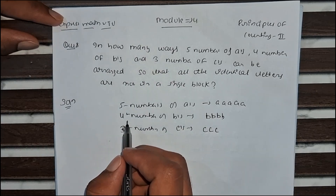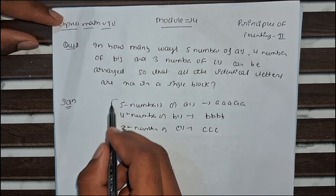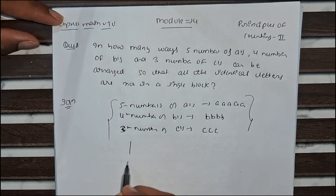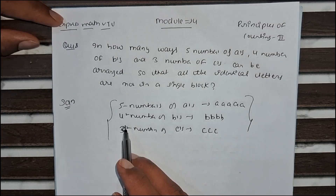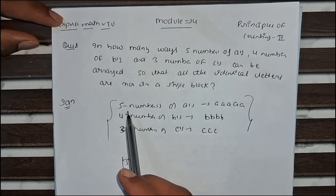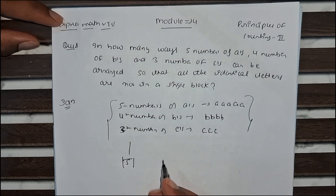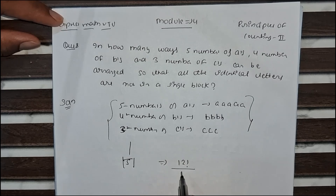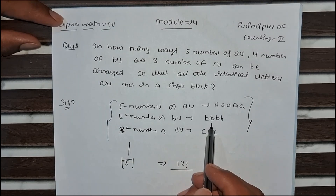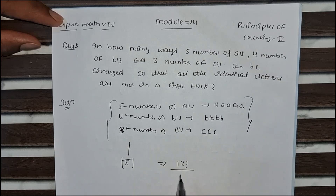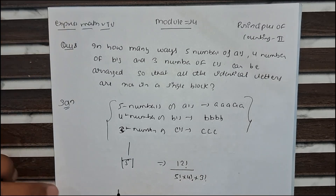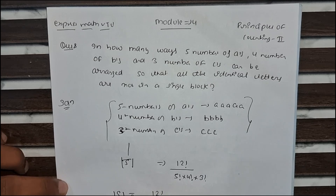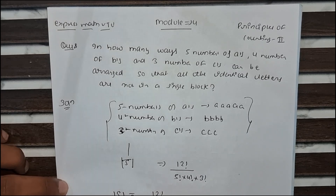We can consider this as a set S. How many total letters are there? 5 plus 4 plus 3 equals 12. So we can arrange them in 12 positions. How many repetitions are there? A repeats 5 times, B repeats 4 times, and C repeats 3 times. So the total set S is 12 factorial divided by 5 factorial times 4 factorial times 3 factorial.